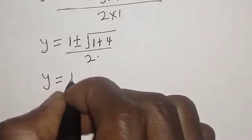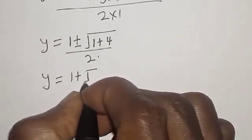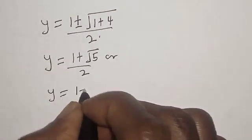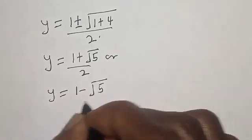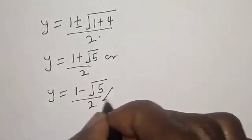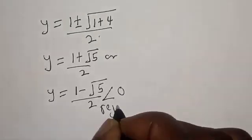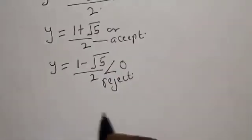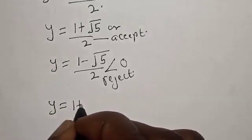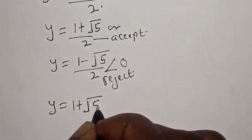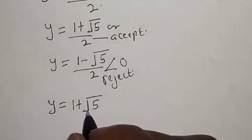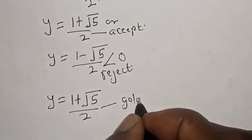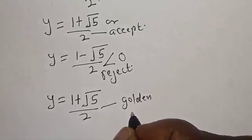y is equal to 1 plus square root of 5 over 2, or y is equal to 1 minus square root of 5 over 2 — and this is less than 0, so we discard it. Therefore y is equal to 1 plus square root of 5 over 2. This is called the golden ratio.